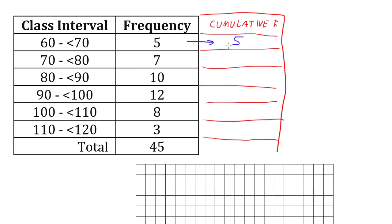Then to keep accumulating more, we grab that 5 and we're going to add it to the next frequency, which in this case is 7. And 5 plus 7 gives us 12.